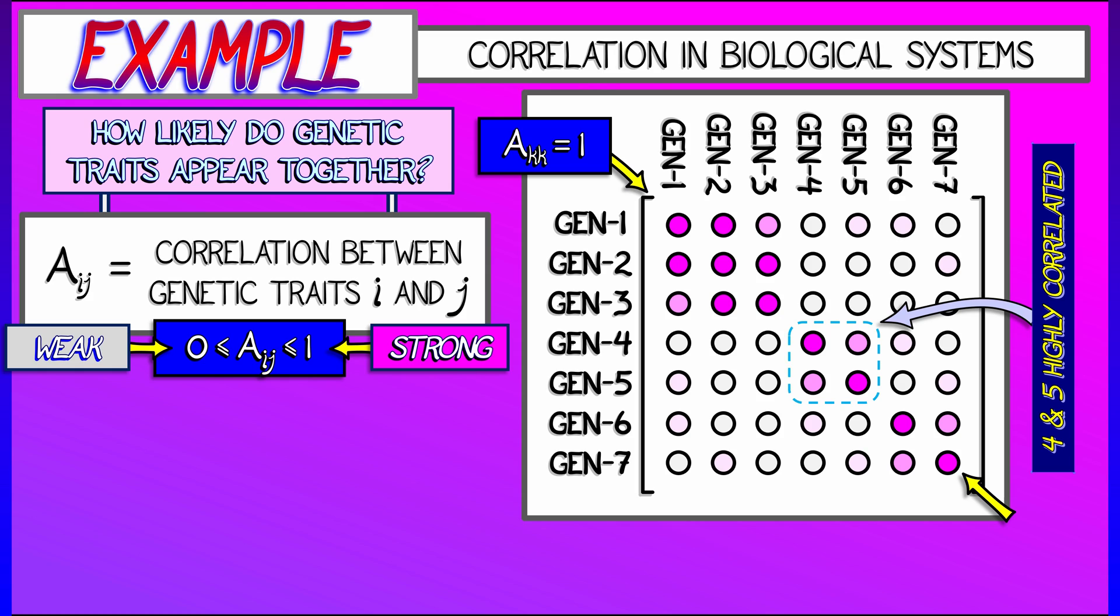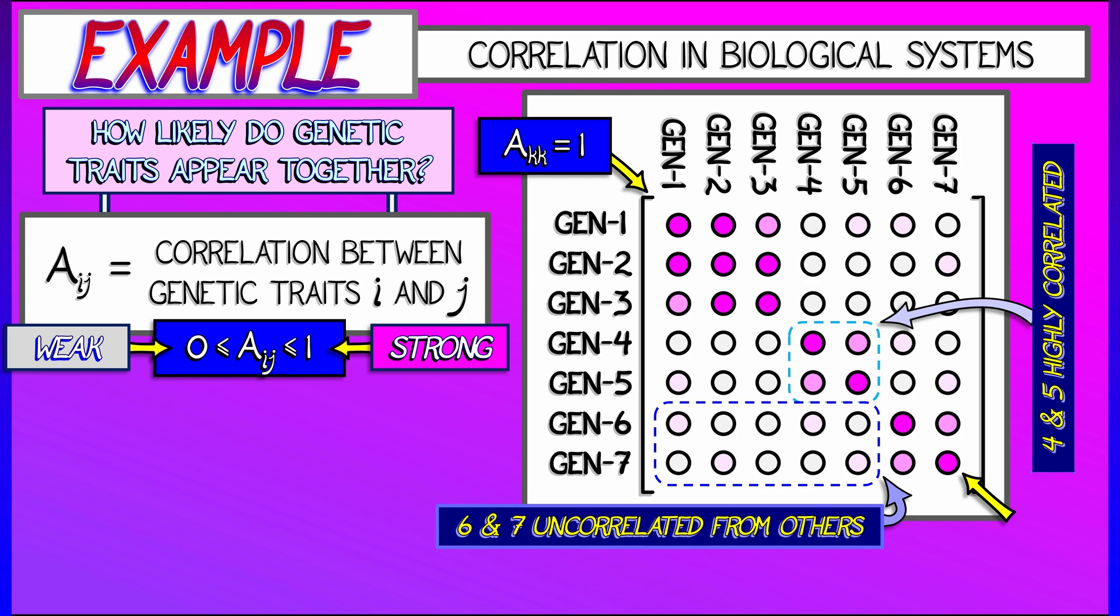Again, in this simple example, traits six and seven appear to be uncorrelated from the other five traits because this corresponding block has entries very close to zero.